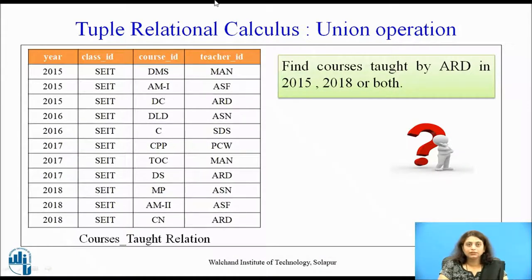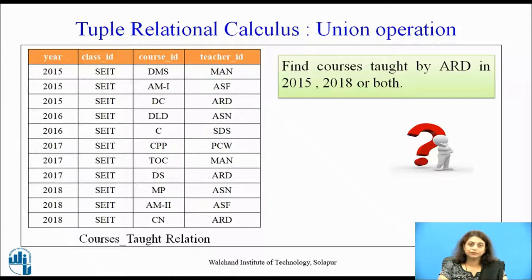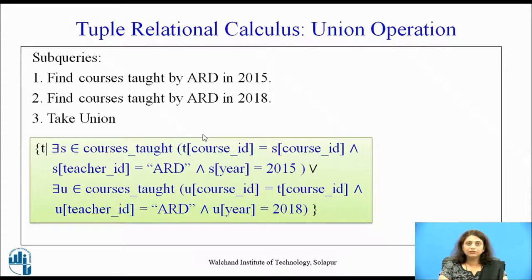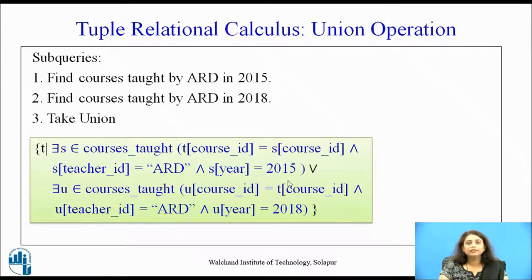Now consider the relation 'courses taught' with attributes year, class id, course id, and teacher id. The query is: find courses taught by ARD in 2015, 2018, or both. We need two sub-queries — one for 2015 and one for 2018 — and then take the union. The query is: {t | ∃s ∈ courses_taught (t[course_id] = s[course_id] ∧ s[teacher_id] = 'ARD' ∧ s[year] = 2015)} ∪ ...